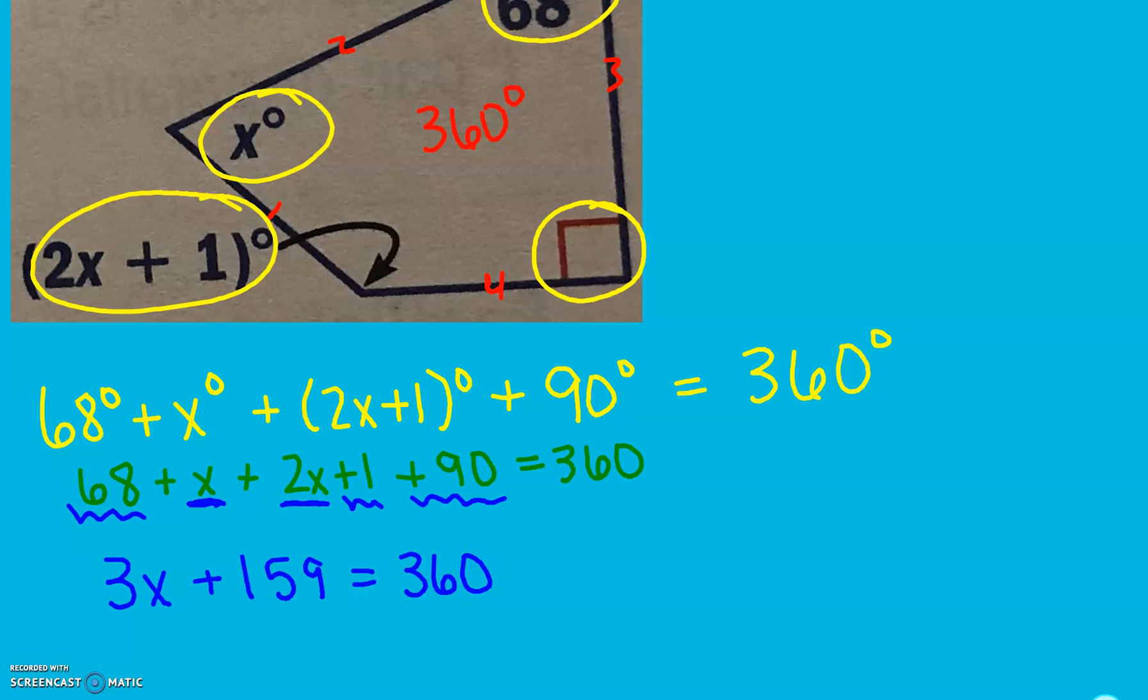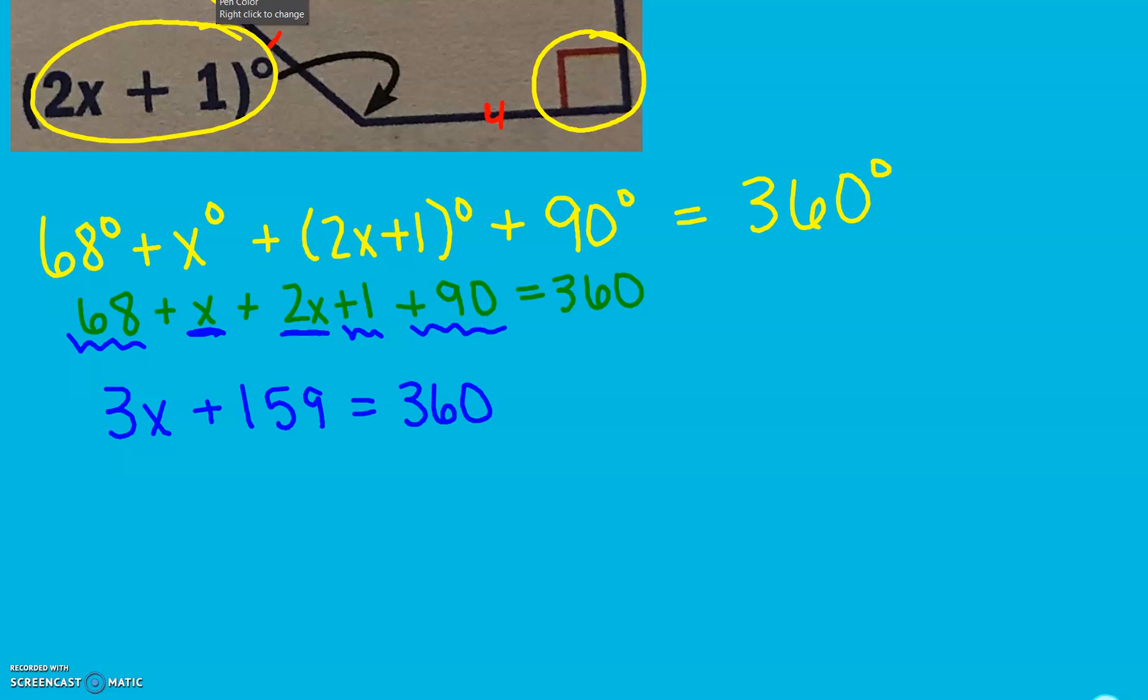Now that I've simplified my left side, my right side is already simplified, we can go ahead and solve. To get my x by itself, the first thing I have to do is get rid of any adding or subtracting. I get rid of addition by subtracting. And however I change one side, I have to do the exact same thing to the other. Now, I have multiplication, which we get rid of by dividing. And x is going to be 67.